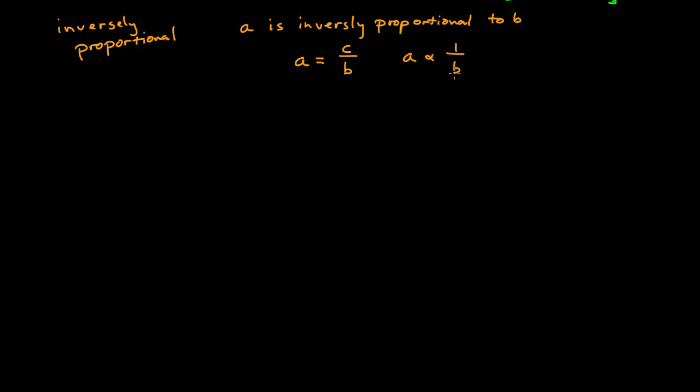We can also say that a is inversely proportional to some power of b, and so a is equal to some constant times b to some power n, where n now is here greater than 0. Or we might say a is proportional to 1 over b to the n.